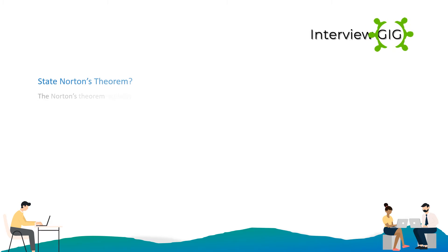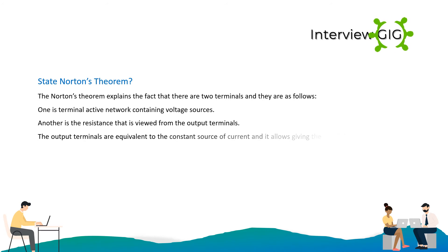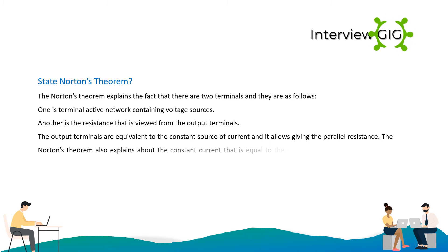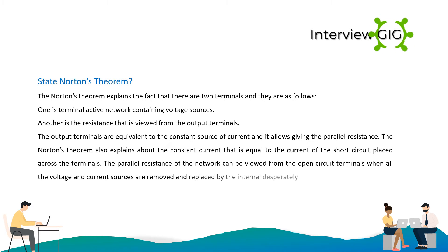State Norton's theorem. Norton's theorem explains that any two-terminal active network containing voltage sources and resistances can be replaced by an equivalent constant current source in parallel with a resistance. The constant current is equal to the current of the short circuit placed across the terminals. The parallel resistance of the network can be viewed from the open circuit terminals when all voltage and current sources are removed and replaced by their internal resistances.